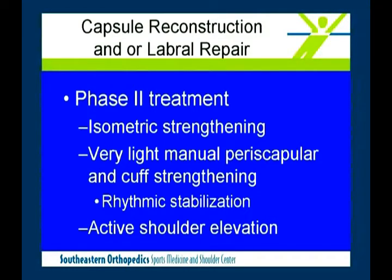Isometric strengthening — flexion, extension, abduction at zero degrees, isometric internal and external rotation against light resistance within the allowed range — all performed manually in clinic. Very light periscapular and cuff strengthening. Rhythmic stabilization is another good tool we can use early without stressing the capsule too much in Phase 2.